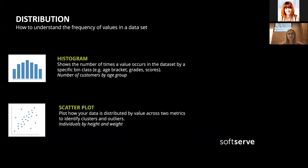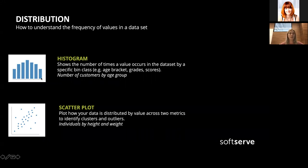For distribution — showing the frequency of values in your dataset — you can use a histogram or scatter plot. A histogram works well for age groups: for example, showing customers from 10–20 years, 20–40 years, where each bar represents an age group. A scatter plot is also useful for showing how many customers fall into certain individual categories.